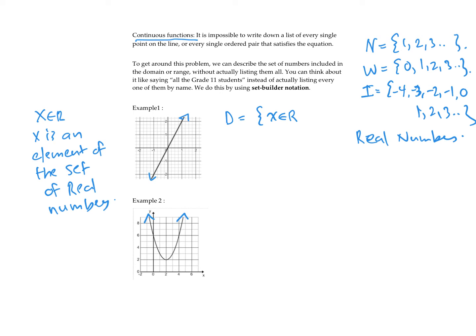When we say XER, we're saying x can be any number. If there is a restriction, we state it at the end, but if there are none, we just say x is an element of the set of real numbers because we can use any value for x. The graph is continuous to the left and right, and the same applies to the range — y is also in the set of real numbers. So x and y are both in the set of real numbers.